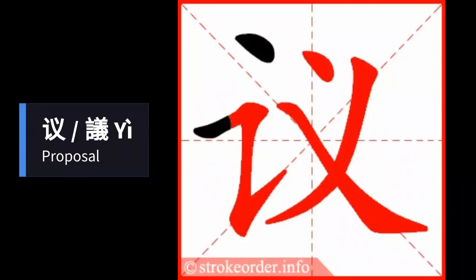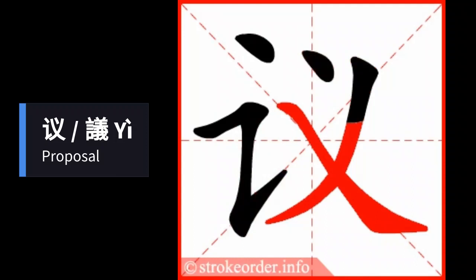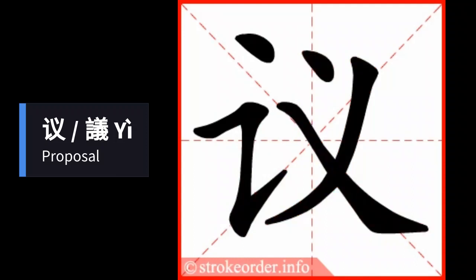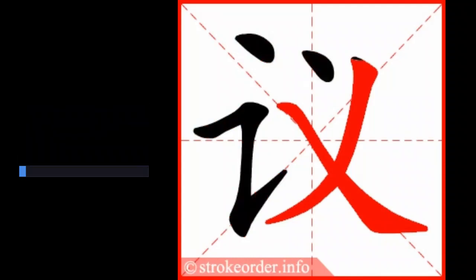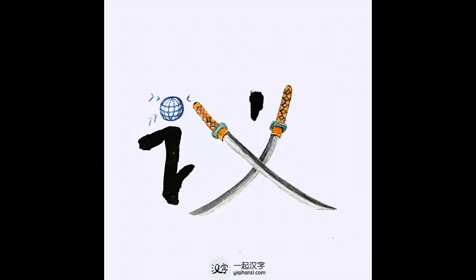In today's video, we'll teach you the Chinese character for proposal, pronunciation: Yī. This is a fun character in the Chinese language because the character Yī is a combination of the characters for speech and justice. When put together, it implies the need for dialogue.